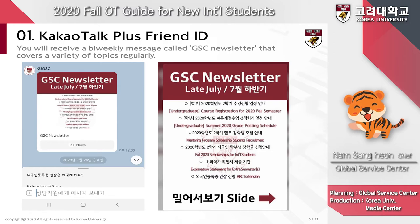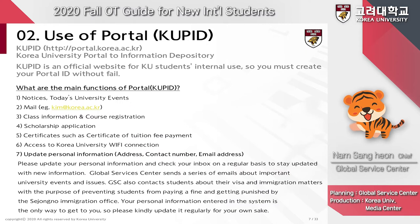Now let's take a look at the university portal, usually called QPID. It is our university's website that every Korea University student, both local Korean and international students, must register and create an ID on. Through QPID, you can check important notices, academic calendars, apply for scholarships, update your personal information, and more. Also, once registered, your Korea University email account is created, so you can access your school email and use the university's Wi-Fi if needed.